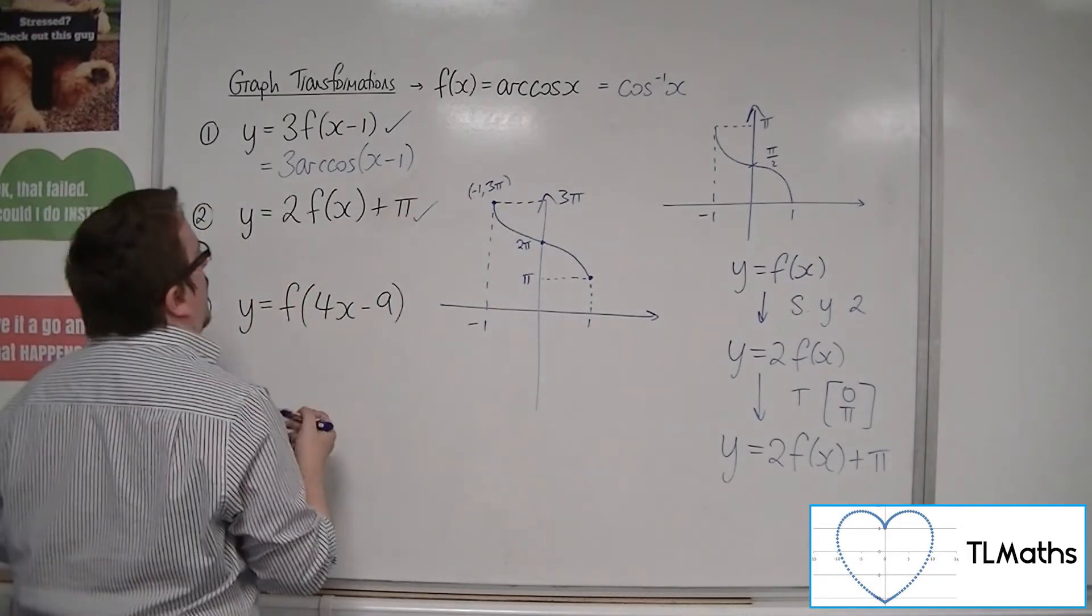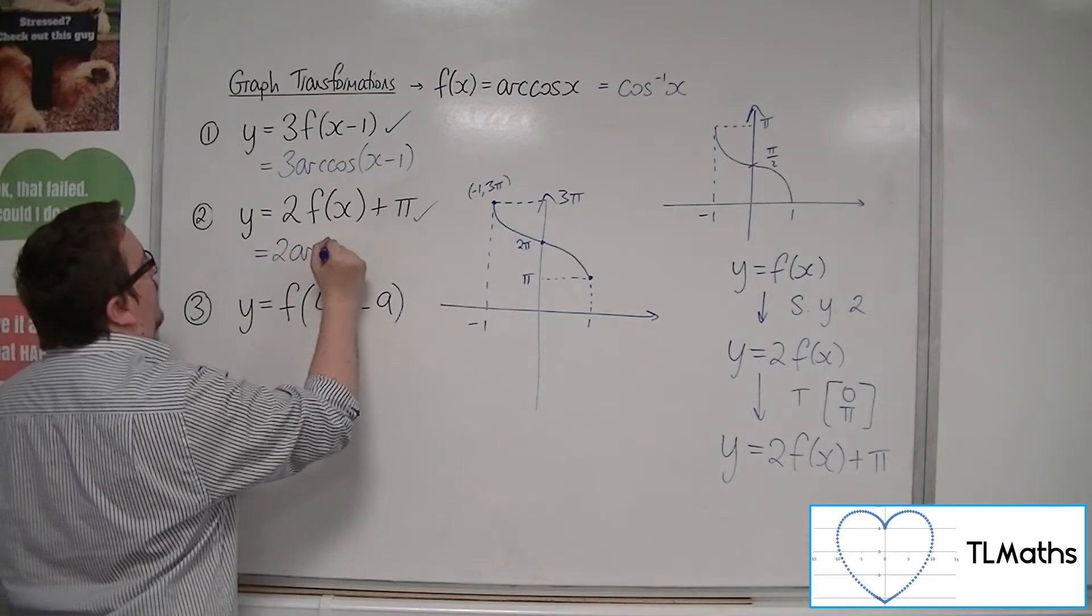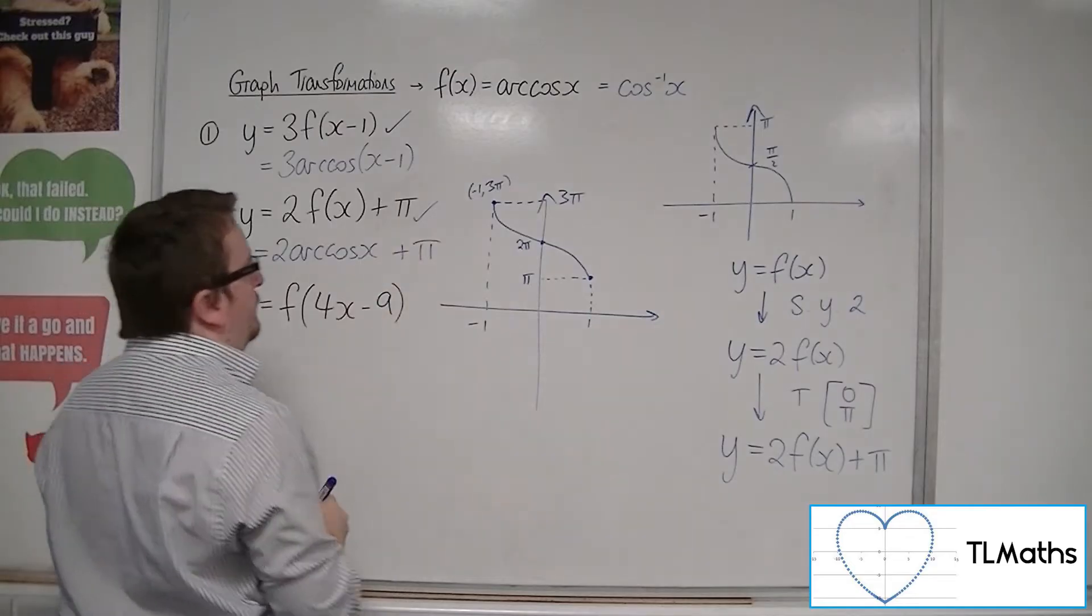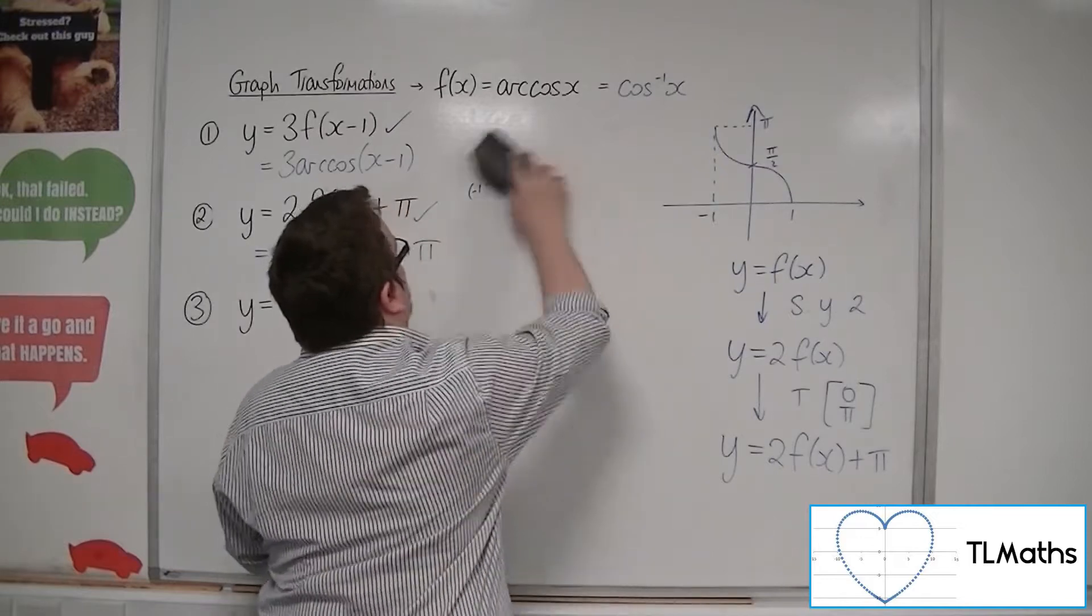Now, the equation that would go with it would be 2 lots of f, so arc cos x, and then plus pi on the end. Right, so finally, number 3.